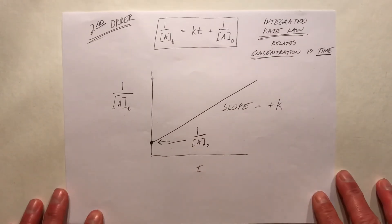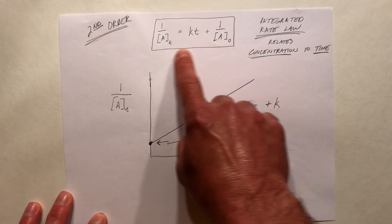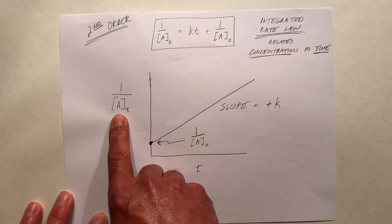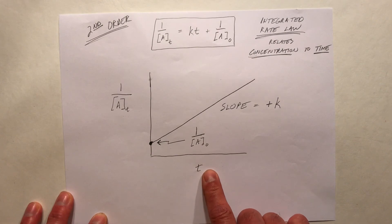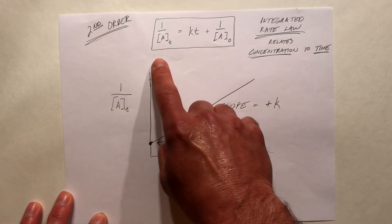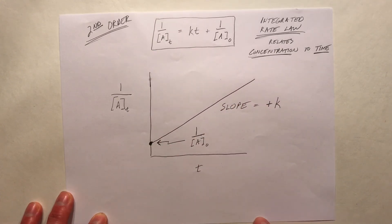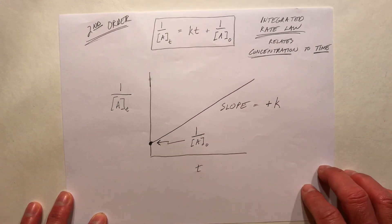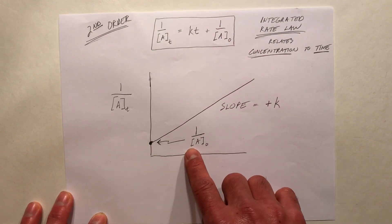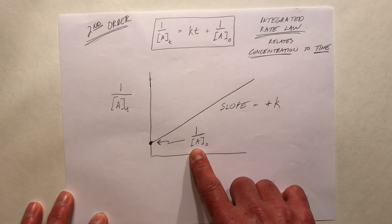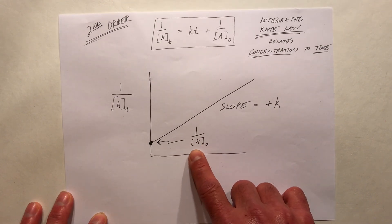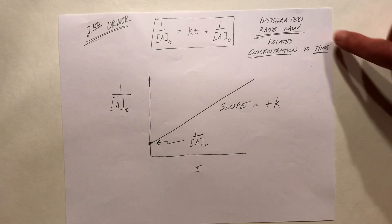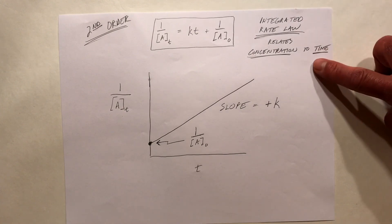For a second-order reaction with this slope-intercept version of the integrated rate law, if we graph the inverse of [A] at time T versus time, we're going to get a straight line. The slope is going to be K — positive slope, so it angles upwards — and the Y-intercept is going to be the inverse of the initial concentration of A. The integrated rate law relates concentration to time.